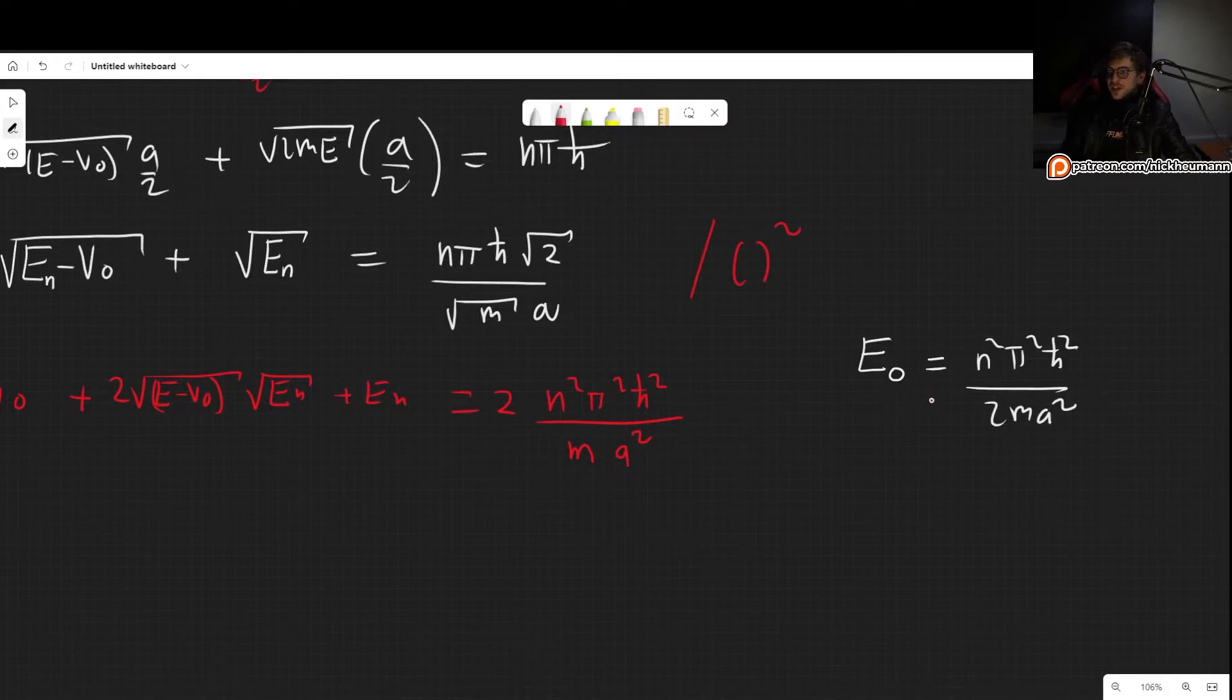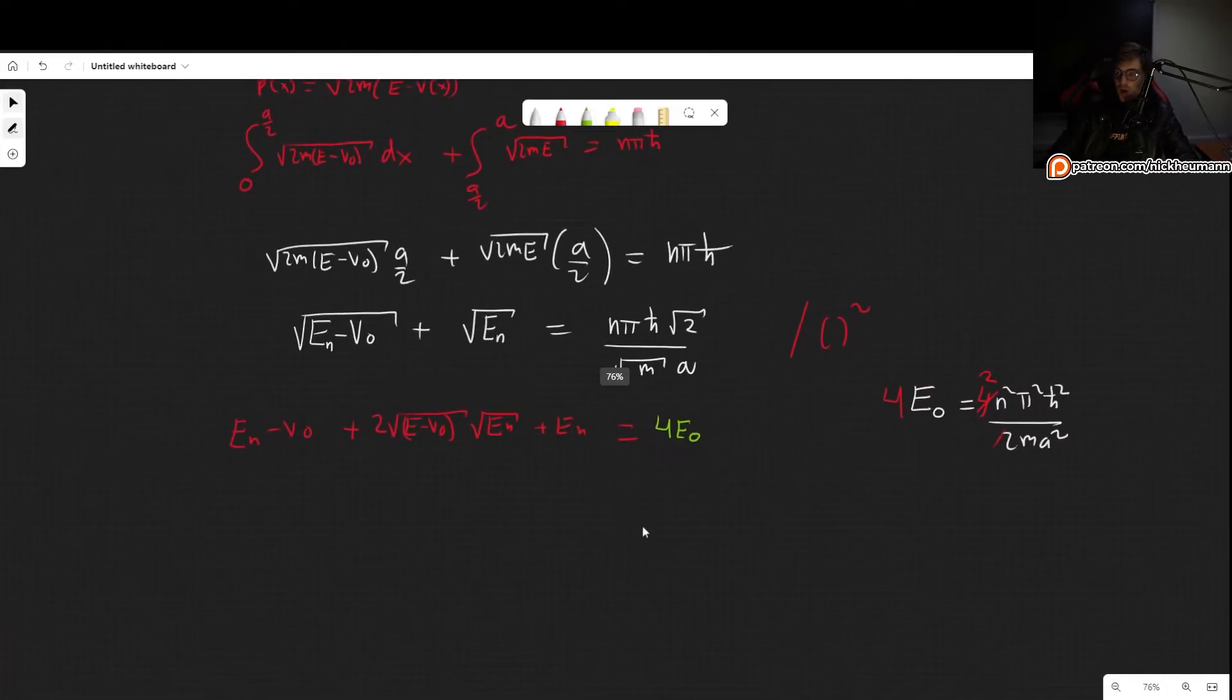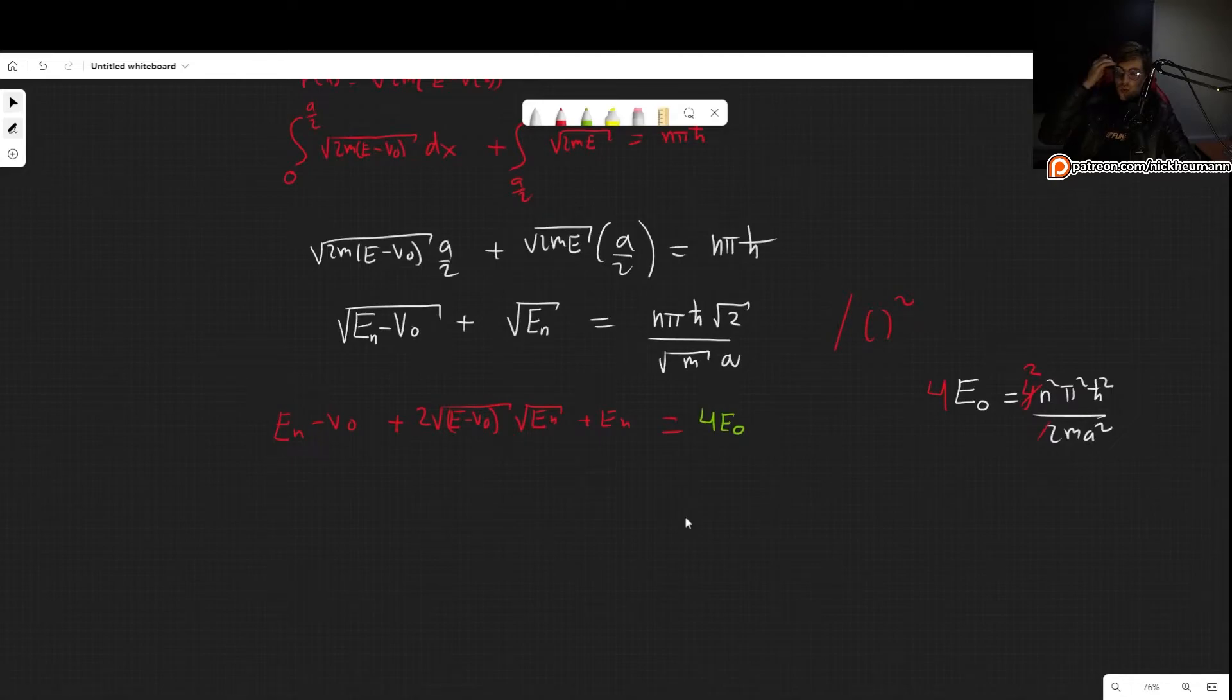So notice here that if we multiply by 4 on each side, we end up getting what we have here, which is 2 times this. So my point here is that this entire thing is simply 4 times the energy level of the ground state of the unperturbed infinite square well.